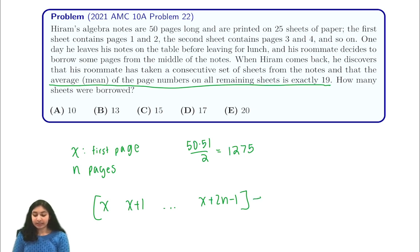And the sum of this arithmetic sequence is going to be the number of terms, which is 2n, times the average of the first and last term, which is x plus 2n minus 1 over 2. And this is equal to n times 2x plus 2n minus 1.